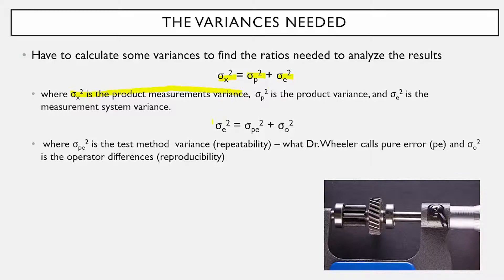We can take that measurement system variance and split it in two. We have sigma-pe-squared, which is the test method variance — that's the repeatability. The 'pe' comes from pure error, what Dr. Wheeler calls it. And then we also have the operator variance — that's the reproducibility. So we're going to take our measurement error and divide it into two parts, repeatability and reproducibility, which of course is the gauge R&R. And we're going to start with the repeatability.